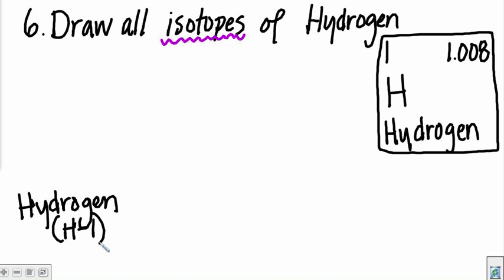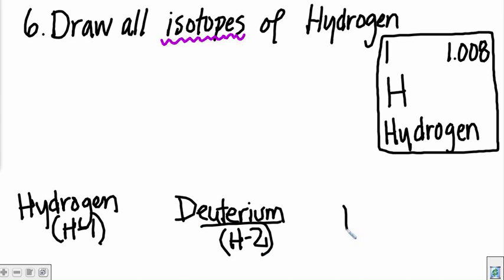I also ask you to draw hydrogen with a mass number of 2, which has a different name other than hydrogen because it's so common, and also hydrogen with a mass number of 3, which has a different name. All three of these are hydrogen. The only thing different is the mass number.